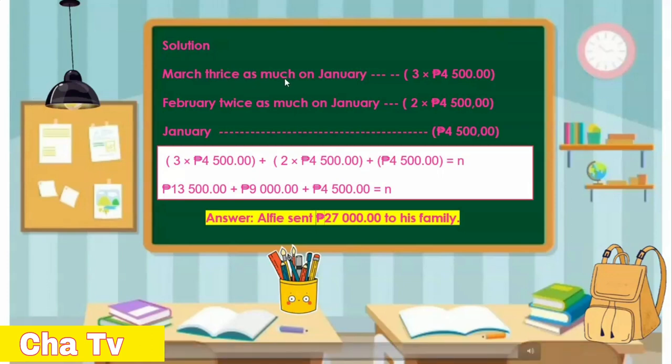This is the solution to the problem. From March, twice as much as February. February, twice as much as January, which is 4,500 pesos. So the number sentence is 4,500 plus 2 times 4,500 plus 4 times 4,500.